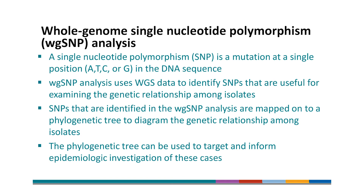The whole genome sequencing data is used to perform a whole genome single nucleotide polymorphism analysis. A single nucleotide polymorphism, or SNP as we call them, is a mutation at a single position — an A, T, C, or G — in the DNA sequence. WGS-SNP analysis uses WGS data to identify SNPs that are useful for examining the genetic relationship among isolates. SNPs that are identified in the WGS-SNP analysis are mapped onto a phylogenetic tree to diagram the genetic relationship among isolates. The phylogenetic tree can be used to focus and inform epidemiologic investigation of the cases.